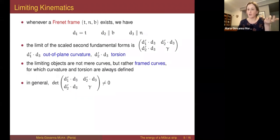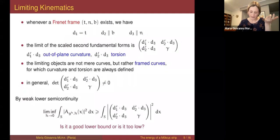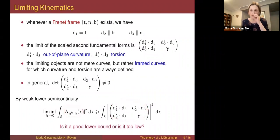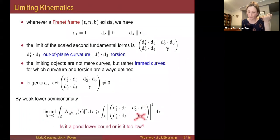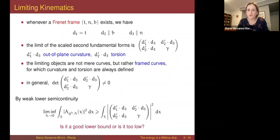This compactness result immediately gives a lower bound for the energy by lower semicontinuity, since those matrices converge weakly to the limiting matrix. And since gamma is not identified in terms of the directors, we can simply minimize over gamma — the minimizer is gamma = 0 — and we get something smaller. But is this lower bound optimal? Can we attain it on a sequence of scaled isometries?